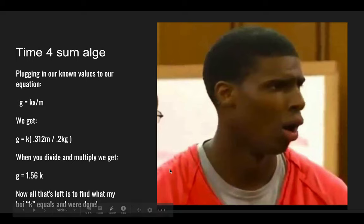Unfortunately, we don't know the value of k, we don't know the spring constant, so it's time to do some algebra. Plugging in the values that we know, g equals... this is our equation, and then these are the values we know. The distance that the spring stretches is 0.312 meters, this is in meters so I just divided it by 100. And then we know the mass of the ball, which is 200 grams, so divide that by a thousand and you get 0.2 kilograms. When you divide and multiply out, you get g is equal to 1.56k. Now all that's left is to find what k equals and then we're all done.